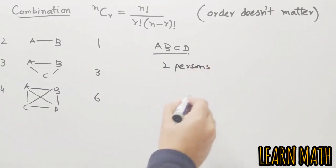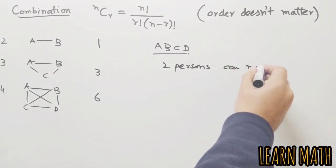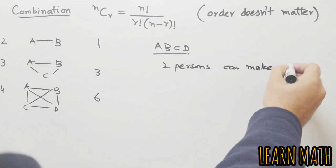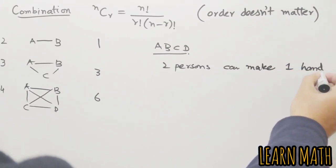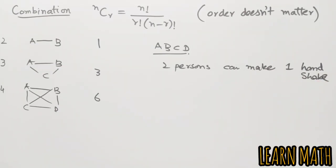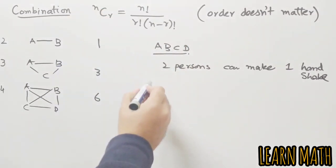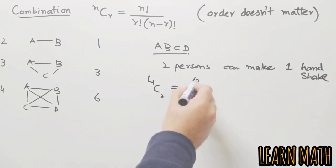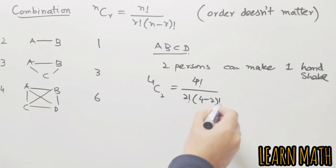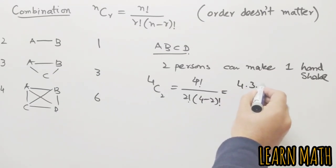Let we have A, B, C, D are four persons, and we know that two persons can make one handshake. A, B, C, D is four, so number of persons n will be four and r is two. So 4C2 is equal to 4 factorial divided by 2 factorial and 4 minus 2 factorial.